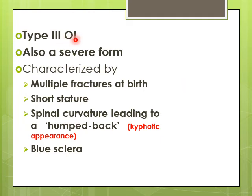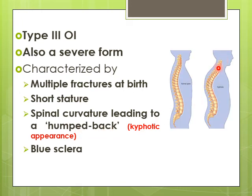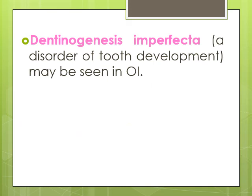OI type 3 is also a severe form of osteogenesis imperfecta. Clinical features include multiple fractures at birth, short stature with short limbs, and spinal curvature leading to a humpback appearance called kyphosis. Blue sclera is also a common feature of OI type 3. In all types of osteogenesis imperfecta, dentinogenesis imperfecta — abnormal development of teeth — may also be seen.